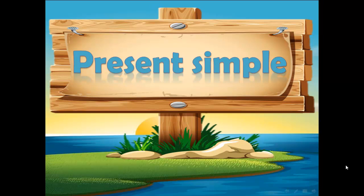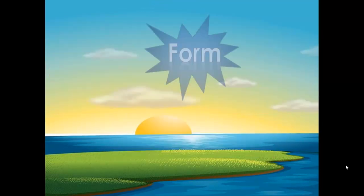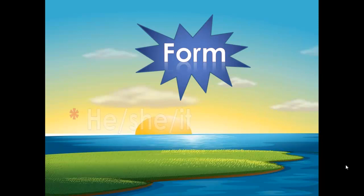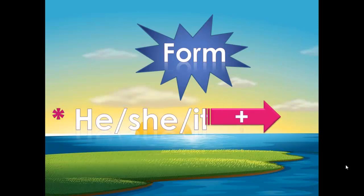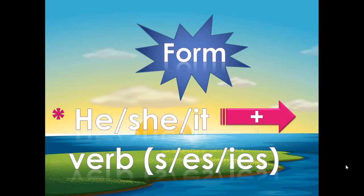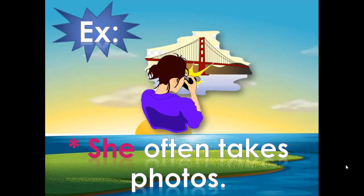Today we are going to learn how we can use the Present Simple Tense. First, we have the form with he, she, it: we add s, es, or ies to the end of the verb. For example, 'she often takes photos.' As you can see, we put s at the end of the verb 'take' because we have 'she' in the sentence.